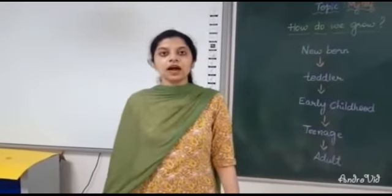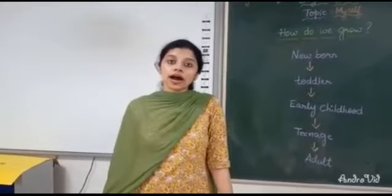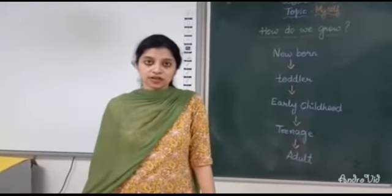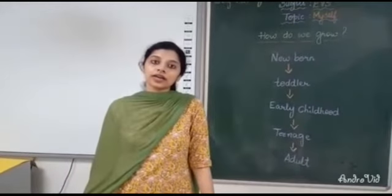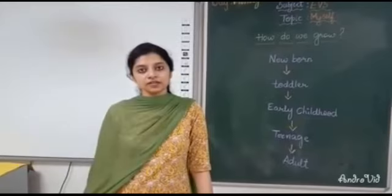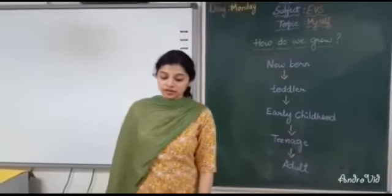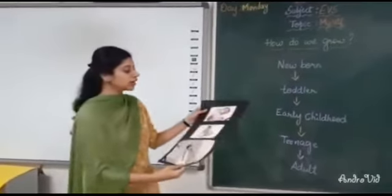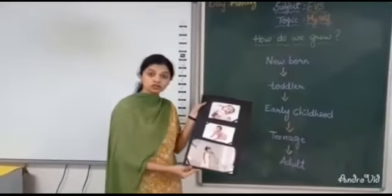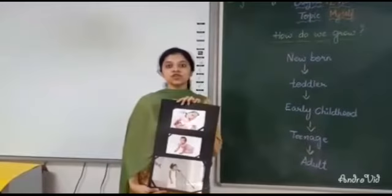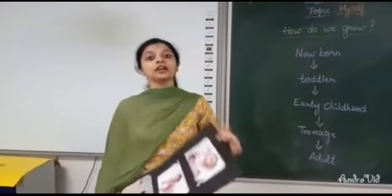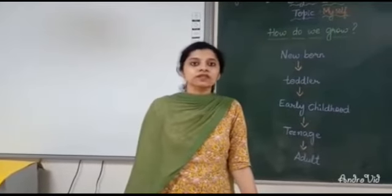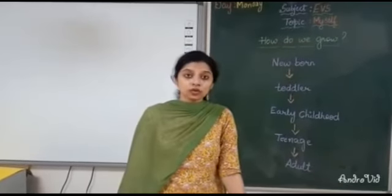So children, as you grow up, your height, your weight, your looks — all those things change. Except for one thing, and that is your eye colour. The colour of our eyes remains the same. Did you all see now how interesting it is to look at the different stages of your growth? You also can take your photographs and do a same chart like this, and also list down the things that you were not able to do when you were very small and the things that you can do now independently.